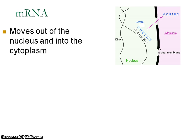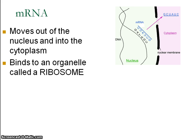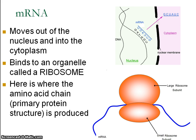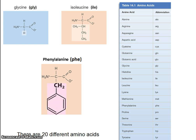The single strand moves out of the nucleus into the cytoplasm and binds to a ribosome, where the protein chain is assembled with the amino acids in the correct order.